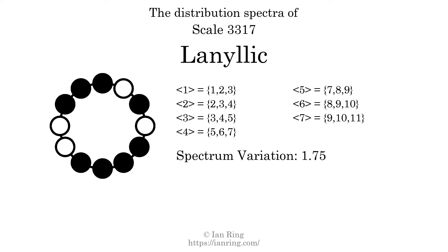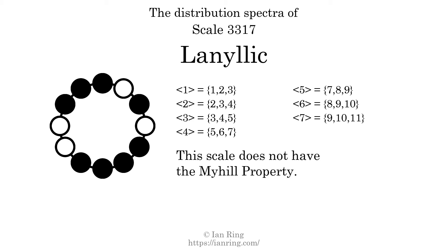The spectrum variation is the sum of all the widths divided by the number of tones. The spectrum variation of this scale is 1.75. Since the variation is greater than 0, this indicates that the scale is not perfectly even. The highest spectrum width is 2. Since this is greater than 1, we know that this scale is not maximally even. If every spectrum has exactly two specific intervals, we call that the Myhill property. This scale does not have the Myhill property. Since the generic interval ranges overlap, this scale is an improper scale.